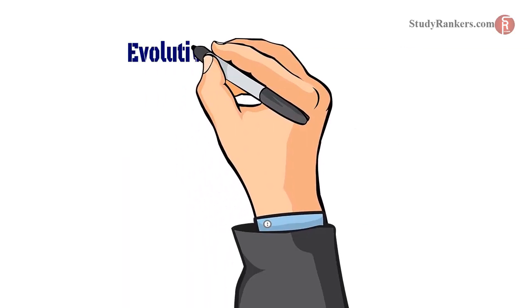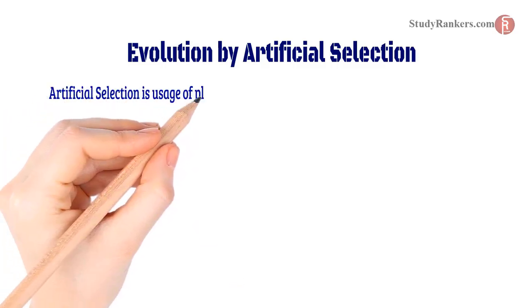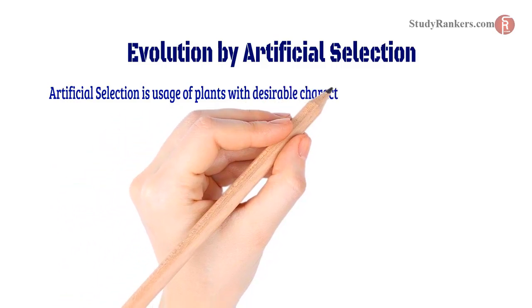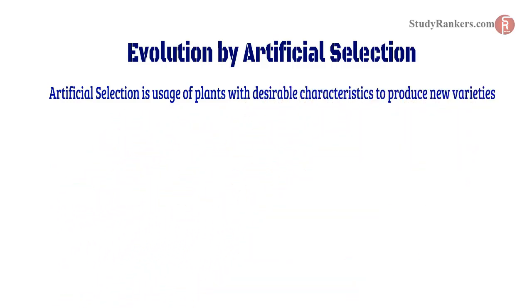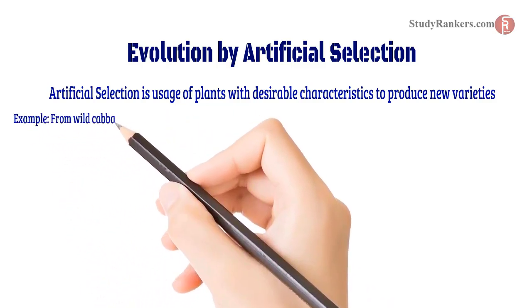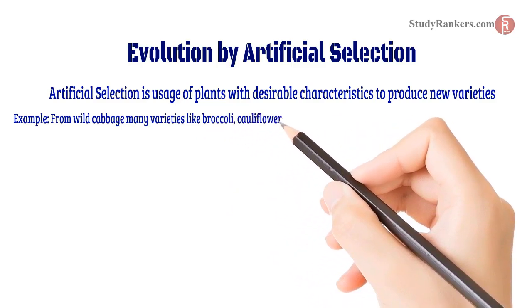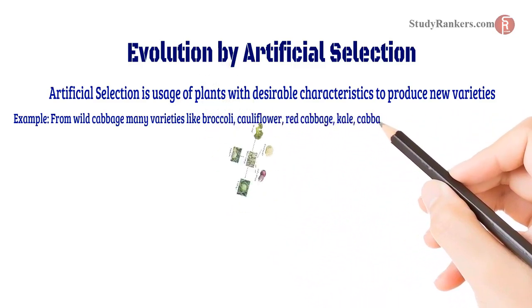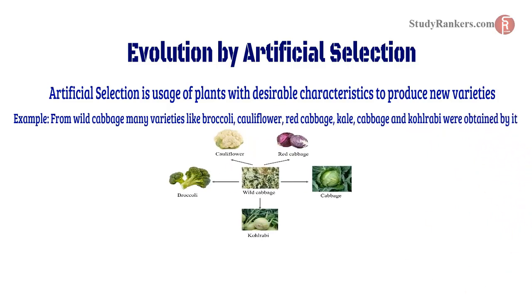The next topic is evolution by artificial selection. Artificial selection is the use of plants with desirable characteristics to produce new varieties. For example, from wild cabbage, many varieties like broccoli, cauliflower, red cabbage, kale, cabbage, and kohlrabi were obtained.